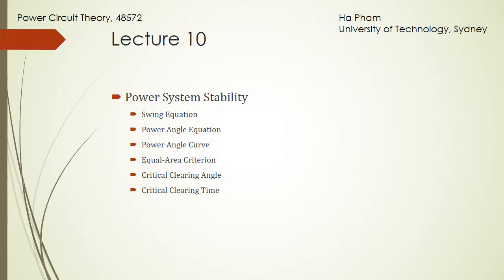Hello everyone, welcome to PCT Lecture 10. Today we will discuss power system stability. It consists of swing equation, power angle equations, power angle curve, and then we will use equal area criterion to find out critical clearing angle and critical clearing time.